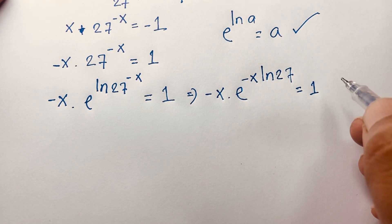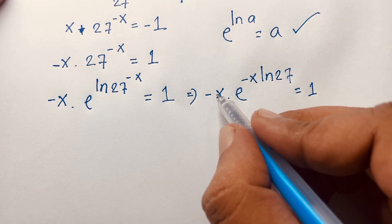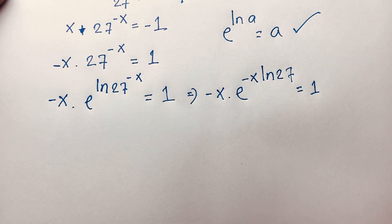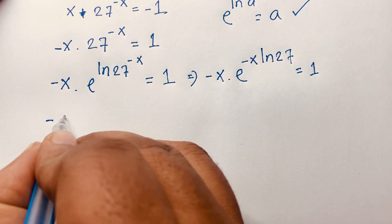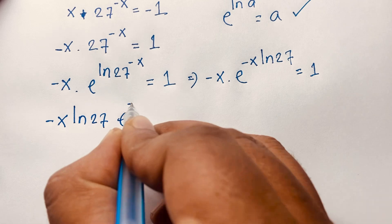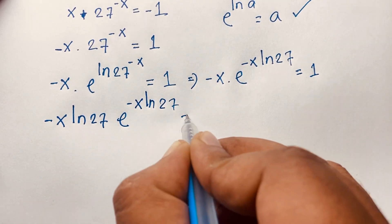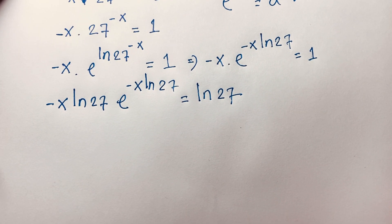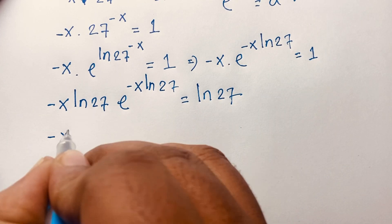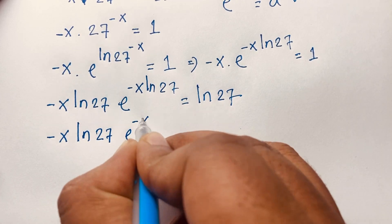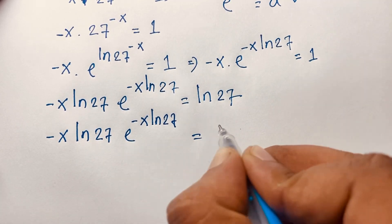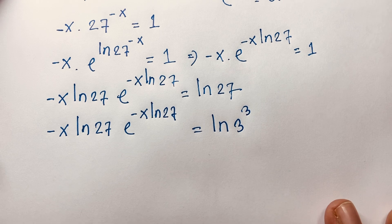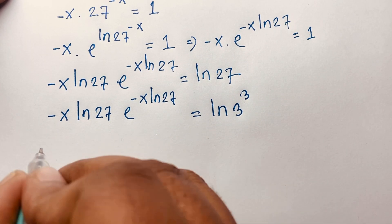To apply the Lambert W function, both sides need matching form. Here we have -x but also ln27 in the exponent. So I multiply both sides by ln27, giving (-x·ln27) · e^(-x·ln27) = ln27. Since 27 = 3^3, ln27 = 3·ln3, so the right side becomes 3·ln3, which equals ln(3^3).